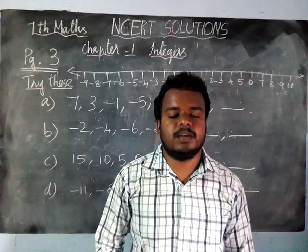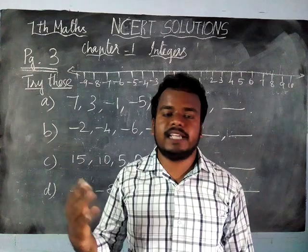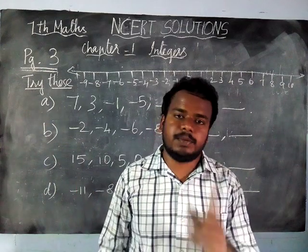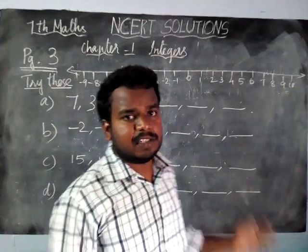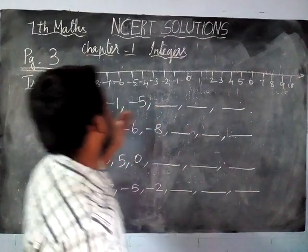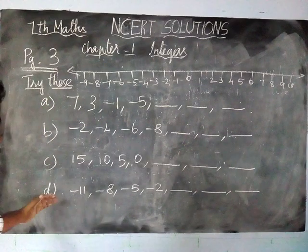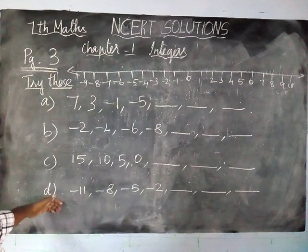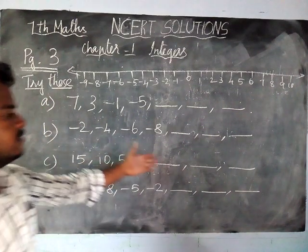Hi students, welcome to MCRT Solutions. Today on Class 7 Maths Chapter 1, 'Try This', we are going to see page number 3. They have given 4 sums on some pattern and we are going to see how to solve this pattern.